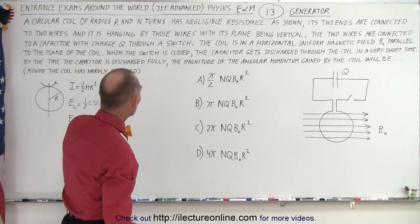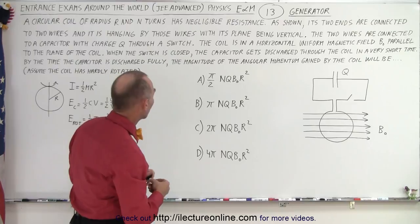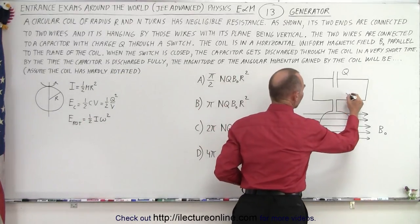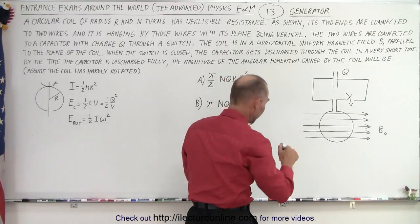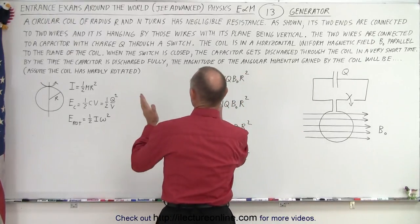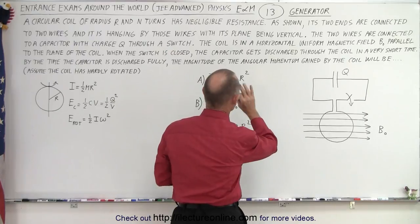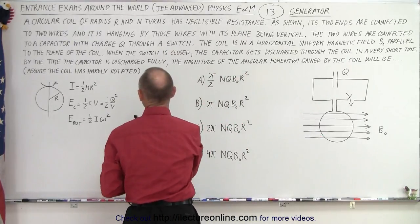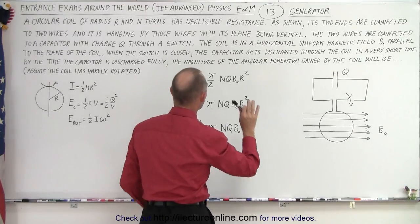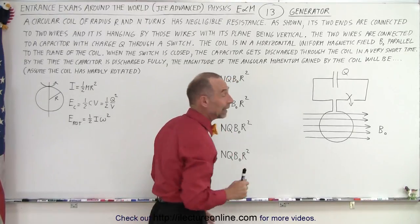When the switch is closed, at one point the switch is going to be closed, and since there is negligible resistance, the current will run through the circuit really quickly. When the switch is closed, the capacitor gets discharged to the coil in a very short time. By the time the capacitor is fully discharged, the magnitude of the angle of momentum gained by the coil will be.